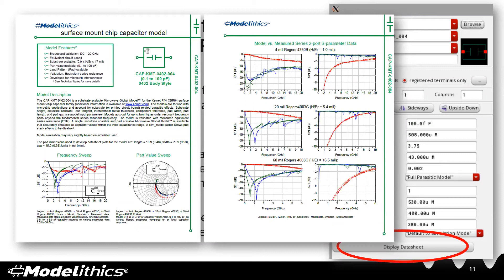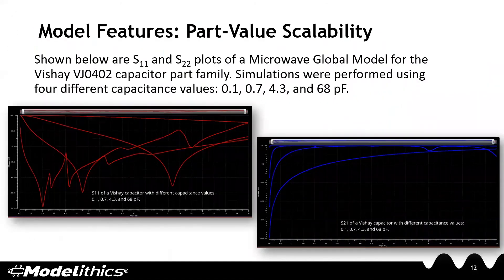Here is an example of part value scalability. These are plots for a microwave global model for a Vishay capacitor part family. Because the model scales with respect to part value, we can perform simulations over different part values. We have S11 and S21 plots of this Vishay capacitor series with different capacitance values of 0.1, 0.7, 4.3, and 68 picofarads. You can see how the performance scales appropriately as we change the part value — S11 is on the left and S21 is on the right.